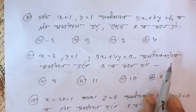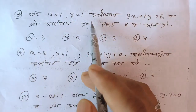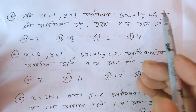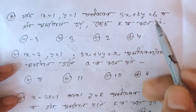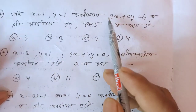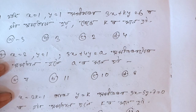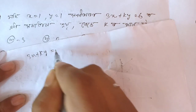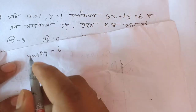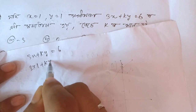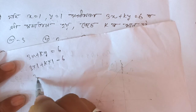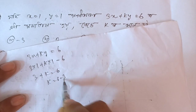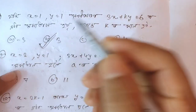Next question: So if we add x equal 1 and y equal 1, then 3x plus ky equal 6 is different. Since x equal 1 and y equal 1, so 1 put this will be 3. We will do this. 3x plus ky equals 6. X is equal to 1 and y is equal to 1. This is equal to 6 minus 3, which is equal to 3. This is equal to b2.